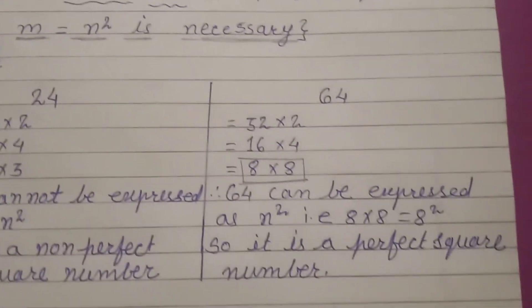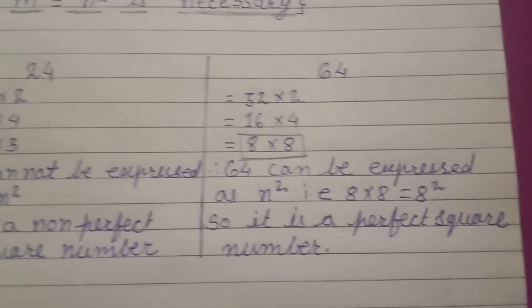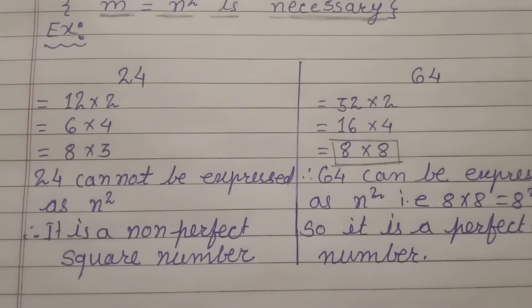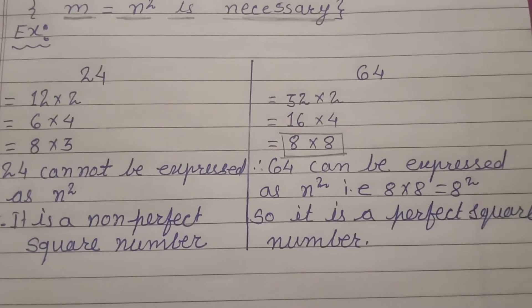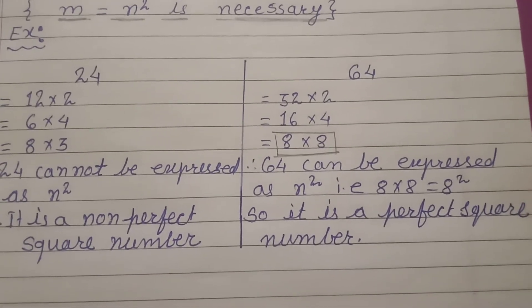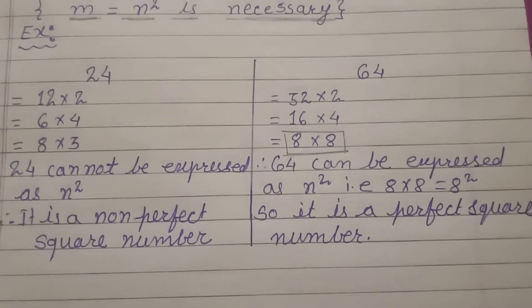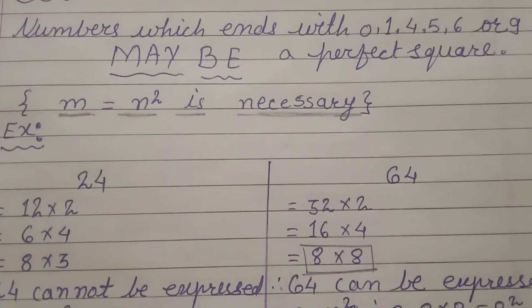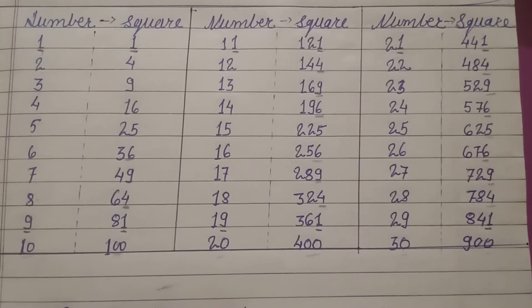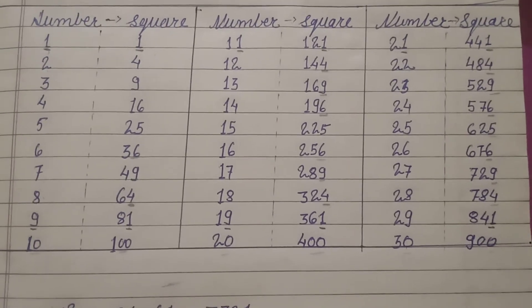That is why 64 is a perfect square and 24 is not a perfect square. So remember children every number which ends with 0, 1, 4, 5, 6 or 9 is not necessarily a perfect square. To be a perfect square it should satisfy this condition. Okay. Now let us move to the next point.